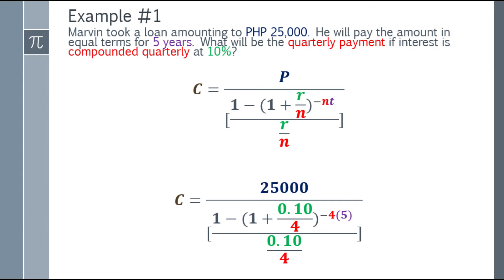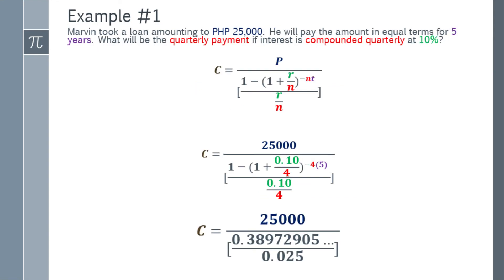Now let's simplify the fraction. Starting with the denominator below 25,000 — the whole fraction below it. Starting with 1 minus the quantity in parentheses: (1 plus 0.10 over 4) raised to negative 4 times 5. When simplified, the answer is 0.38972905 and so on. Then 1 minus that result gives 0.38972905.